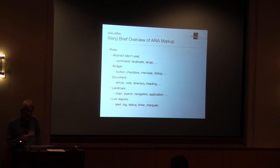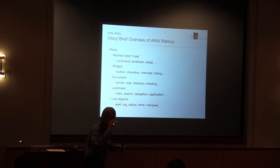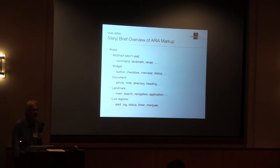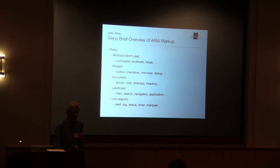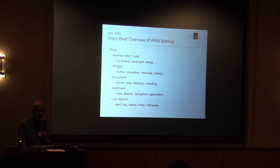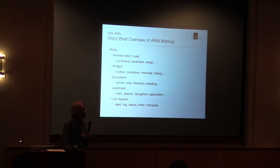There's a set of widget roles — mostly what I've been talking about. Button derives from command; range is the base class for spinners and sliders. The widget roles include buttons, checkboxes, menu bars, dialogs, trees, tab lists, and alert dialogs. It's pretty much trying to mimic everything you can find on the desktop. There are also document roles — things like article, note, and directory (which means table of contents). These let you give more specificity to sections of your document.